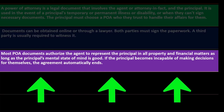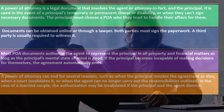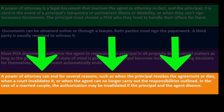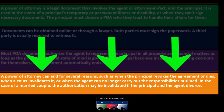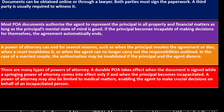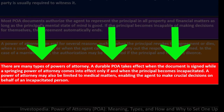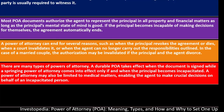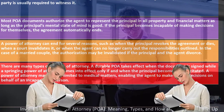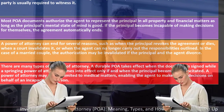The POA document authorizes the agent to represent the principal in all property and financial matters as long as the principal's mental state of mind is good. If the principal becomes incapacitated and incapable of making decisions for themselves, the agreement automatically ends. A power of attorney can end for several reasons: when the principal revokes the agreement or dies, when a court invalidates it, when the agent can no longer carry out the responsibilities, or in the case of a married couple, if the principal and agent divorce.